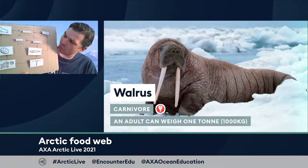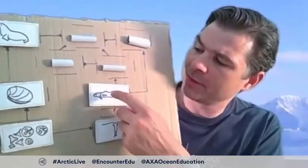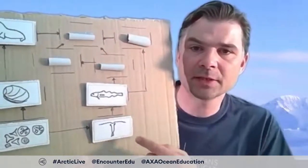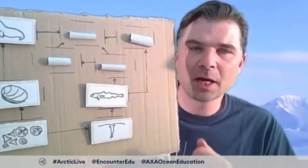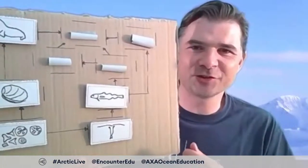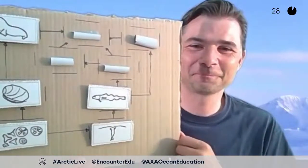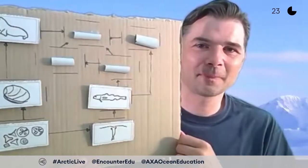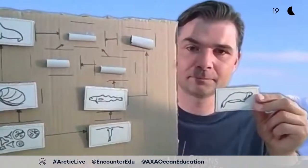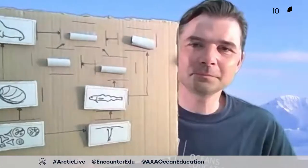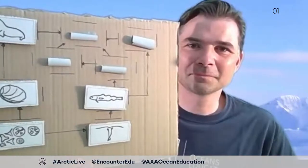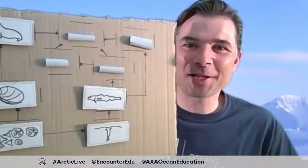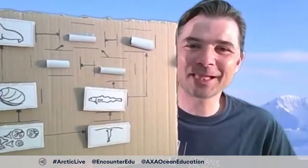Next, the animal that eats mainly the Arctic Cod - with the clue 'unexpected visitor'. The answer is the seal - the unexpected visitor that came up through our sampling hole when we were sampling. And we also have one other animal that eats the cod - the clue is 'Flipper's friend' - and that is the beluga whale, from the same family as the dolphin.